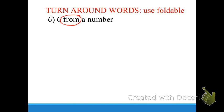What that means is that you're going to put X first and six second. Turnaround means we're going to flip-flop the order. 'From' means subtract. We're going to put X first, because 'a number' goes first, and six second. So the answer is X minus six. It's very important you know how those turnaround words work. If you miss them, you'll get the whole answer wrong.